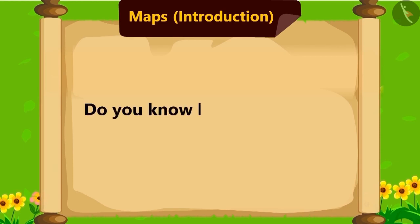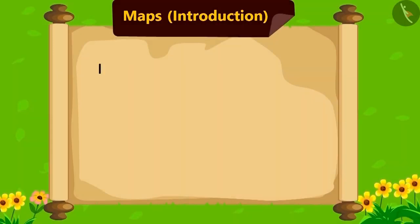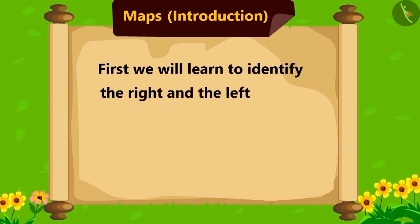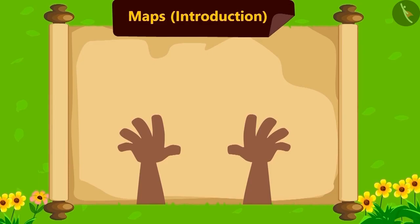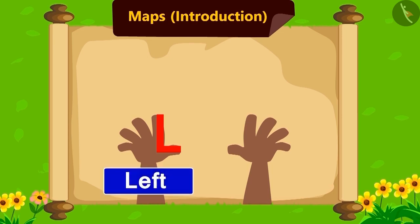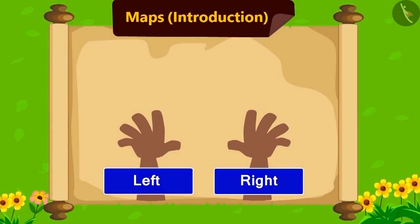First we will learn to identify the right and the left hands. Keep both your hands like this. Now, in whichever hand you see this type of L, that is your left hand, and the other hand is your right hand. The direction which is towards your right hand is the right direction.